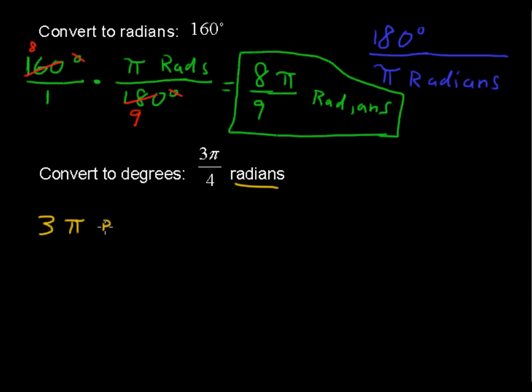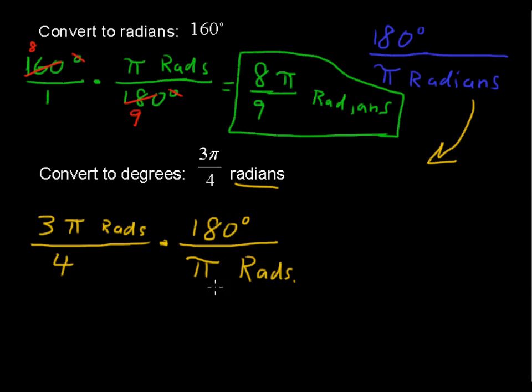So 3 pi over 4 radians multiplied by, we're going to use this fraction, 180 degrees over pi radians. We want to cancel out the radians, so we'll put the radians in the denominator. So we'll just use that blue fraction as it is, and we put 180 degrees in the numerator.